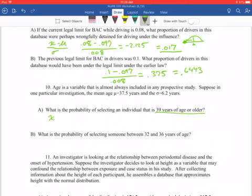We're going to put this into our formula of x minus mu over the standard deviation. 39 minus 37.5 divided by 6.2 is going to give us 0.24 Z-score. When we look up Z-score in our table B, we're going to get a 0.5948.